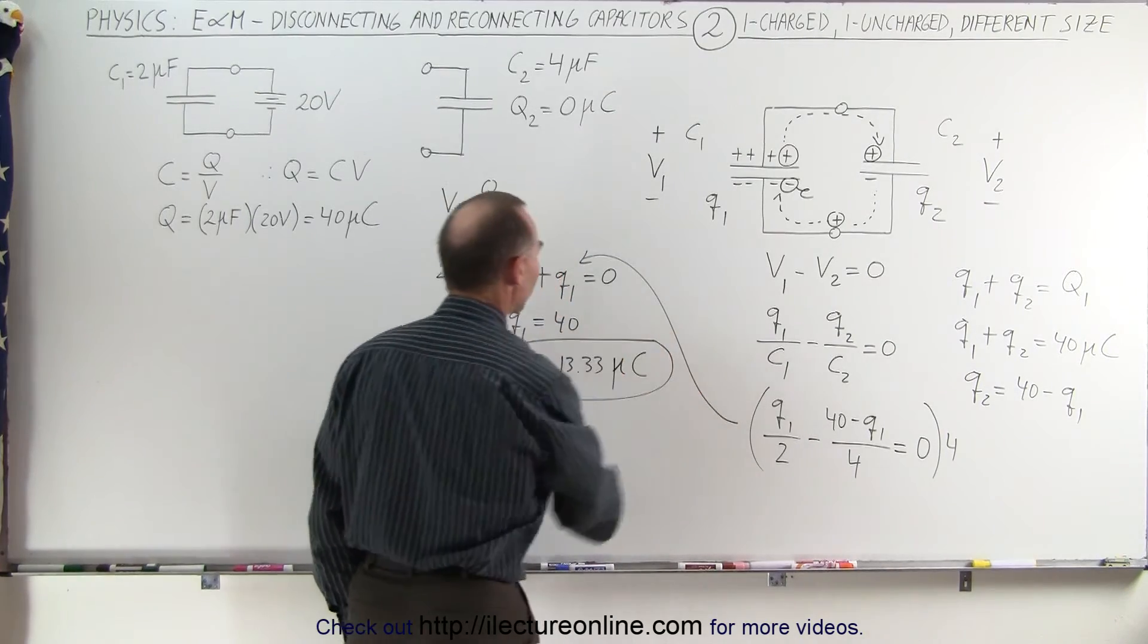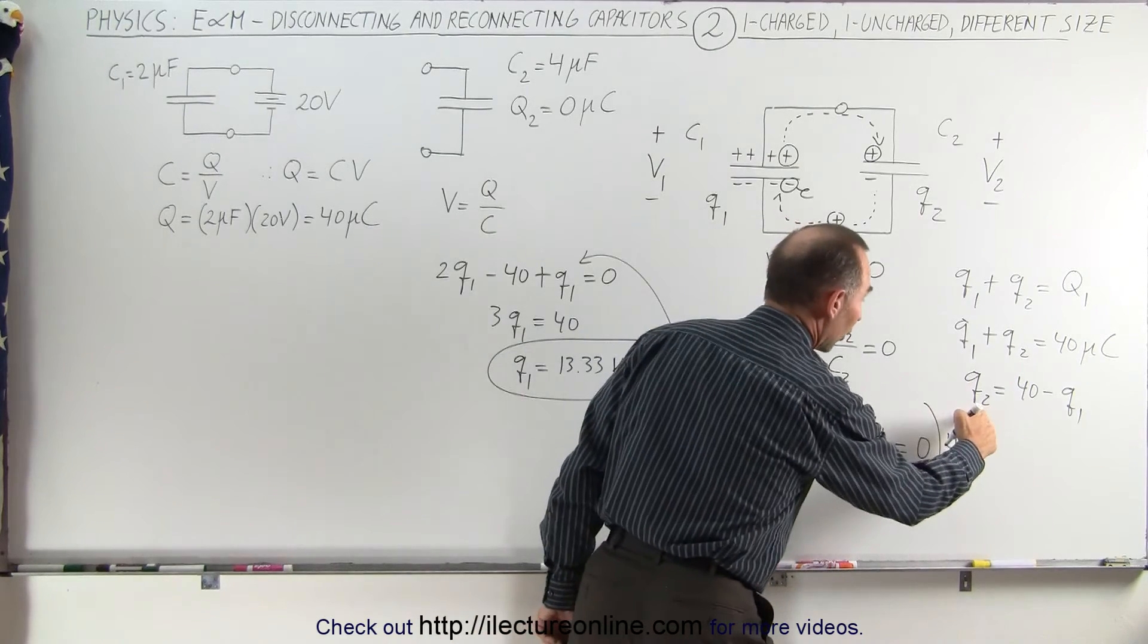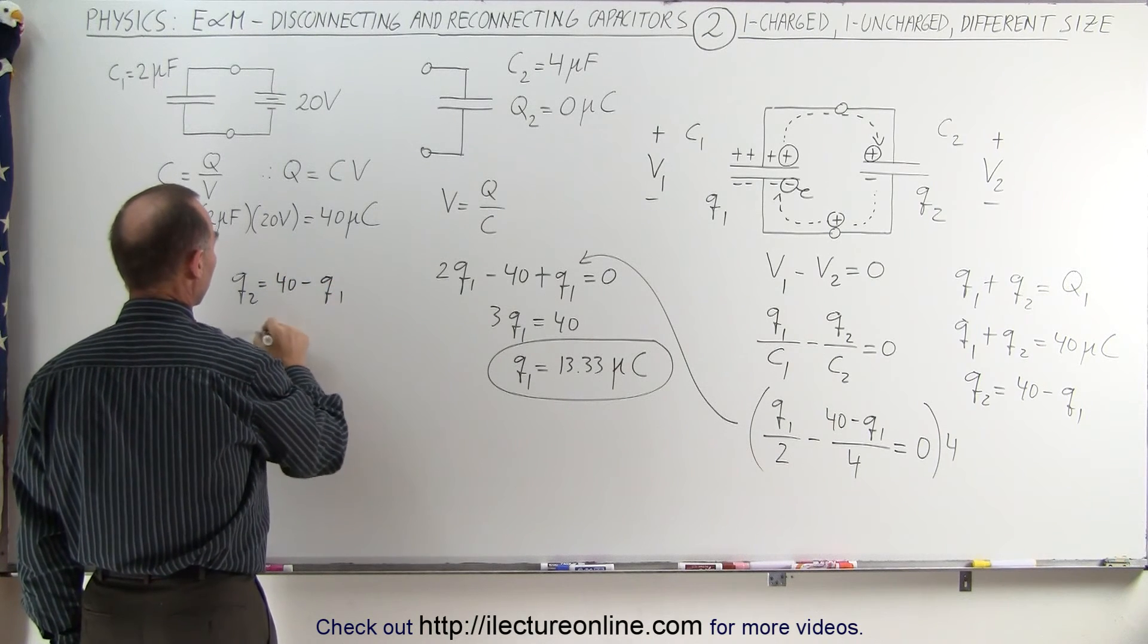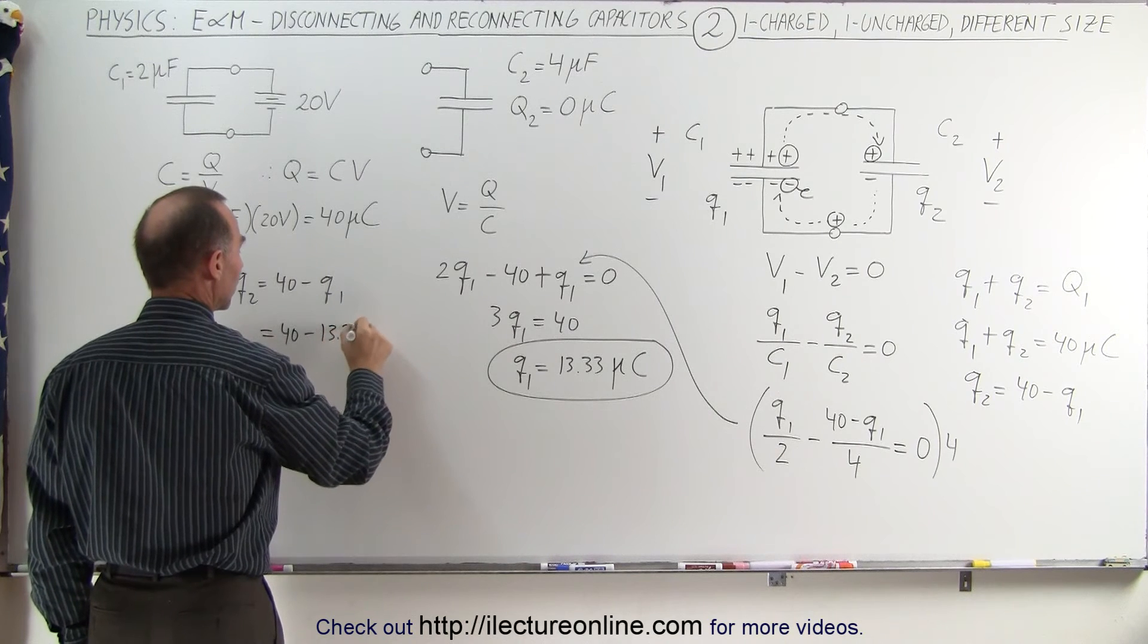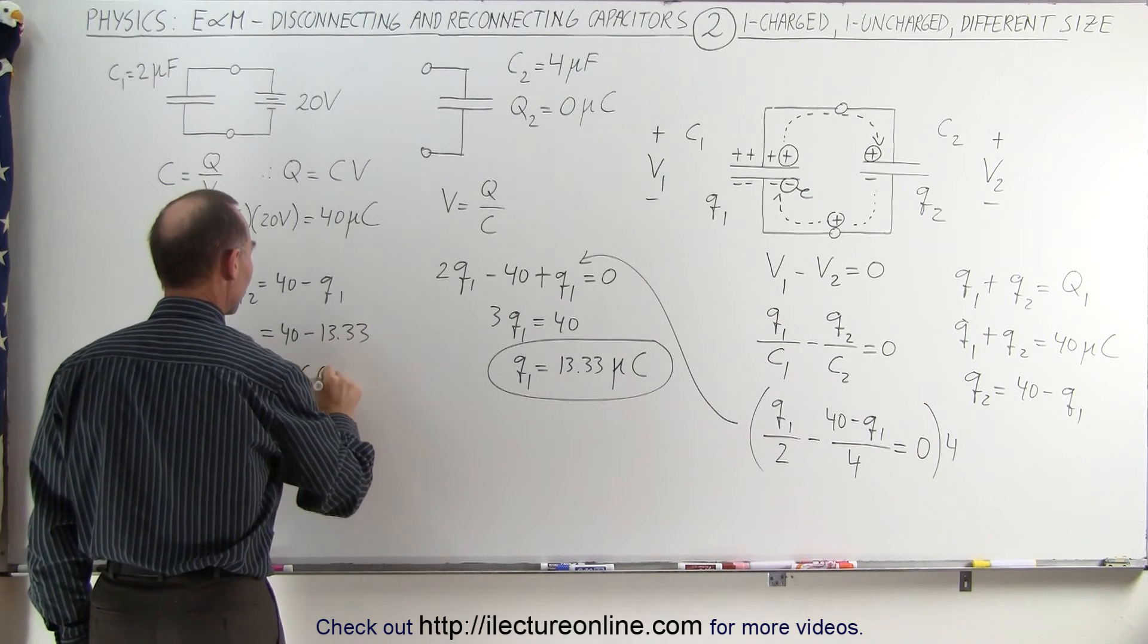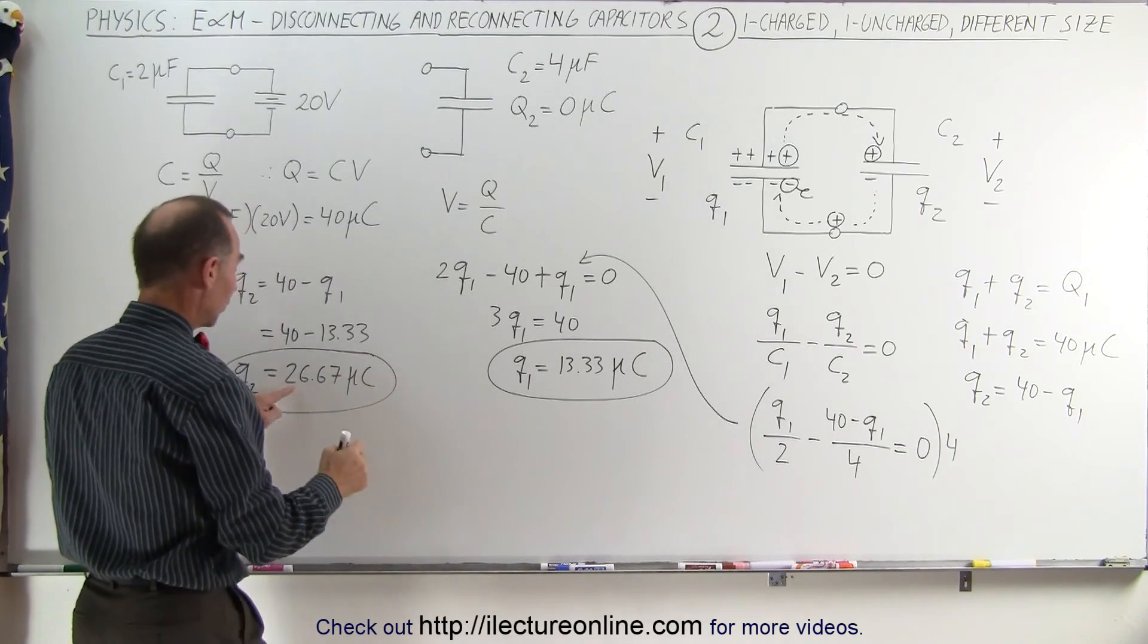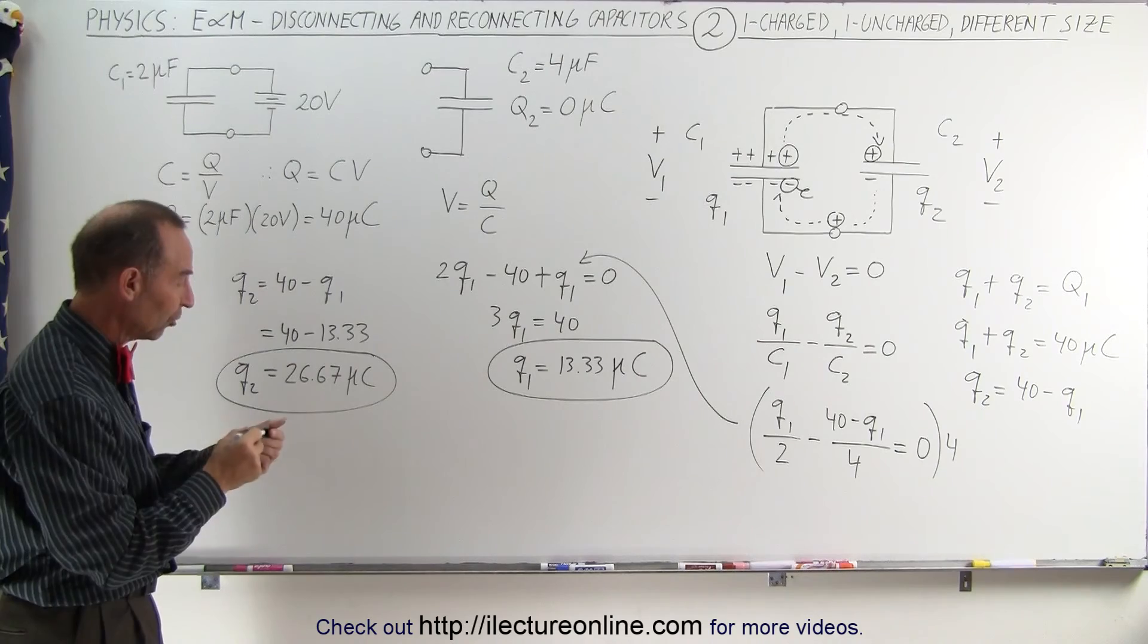So that's the charge on the first capacitor. Now the second capacitor will get charge Q2. So we can say that Q2 is equal to 40 minus Q1, which is 40 minus 13.33, or 26.67 micro coulombs for Q2. And notice when you add them together, just to check, this plus this does indeed add to the initial 40 micro coulombs you started with.